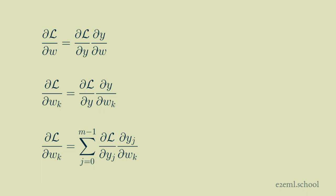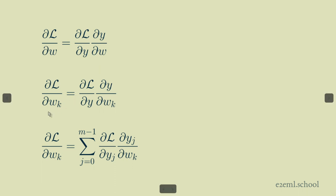By the chain rule, the weight gradient is equal to the output gradient times the partial derivative of the output with respect to each of the weights. We can expand that to be explicit about treating each individual weight separately, and expand further to be explicit about treating each individual output separately.